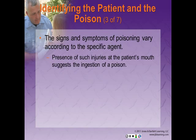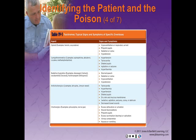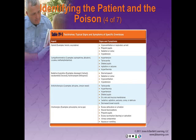The signs and symptoms of poisoning vary according to the agent. Table 19-1 shows Toxidromes — typical signs and symptoms of specific overdoses by agent type. For example: opioids (narcotics), sympathomimetics like epinephrine, methamphetamine, or cocaine, sedative hypnotics like benzodiazepines, anticholinergics like atropine and jimsonweed, and cholinergics like pilocarpine or nerve gas. Please use this as a study guide to be very familiar with the agents and their signs and symptoms.